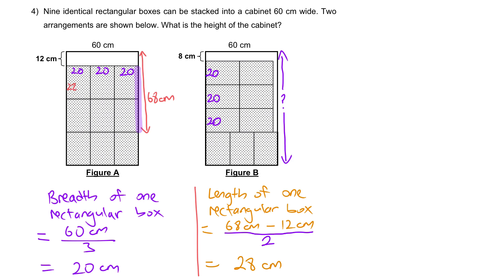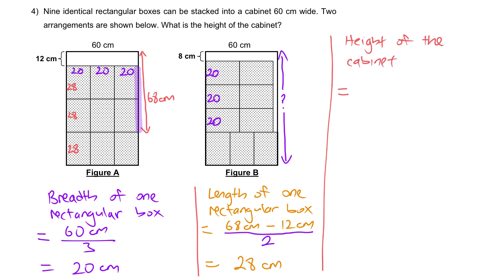Given that each box length is 28 cm, we can figure out the height of the cabinet. Height of the cabinet equals 28 plus 28 plus 28 plus 28 plus 12, which is 28 cm times 3 plus 12, giving us 96 cm.